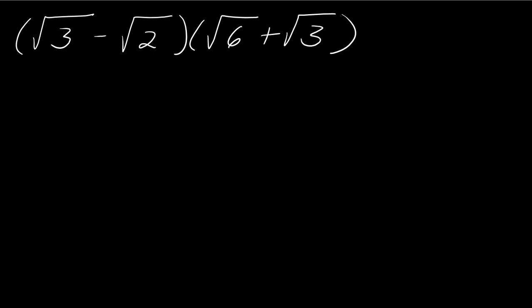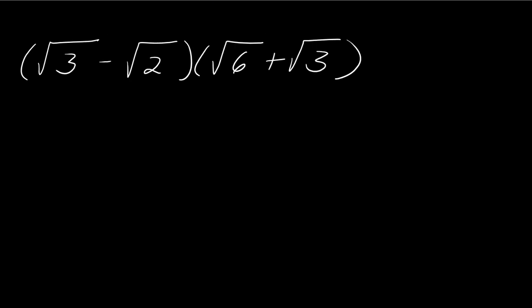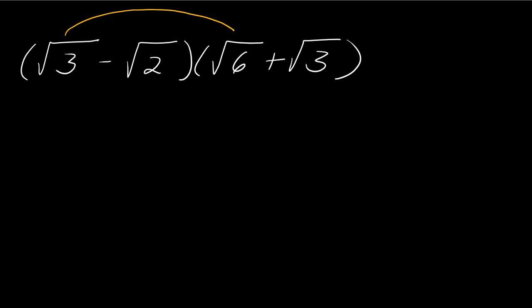Now let's turn up the volume and multiply this whole party together. I want to multiply everything in here by everything in here — sometimes called foiling. So I'm going to have the square root of 3 times the square root of 6, which gives the square root of 18. Then the square root of 3 times the square root of 3, which is the square root of 9.